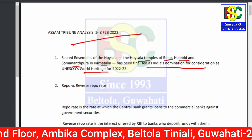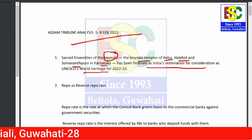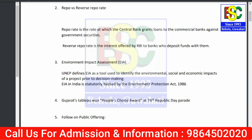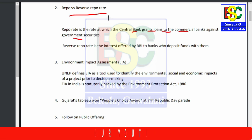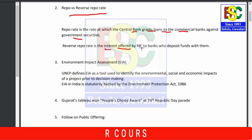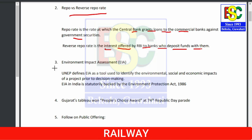Point number two: Repo rate versus Reverse Repo rate. Repo rate is the rate at which the central government grants loans to commercial banks against government securities. Reverse Repo rate is the reverse of it — the interest offered by RBI to banks to deposit funds with them. This can come as a direct question in PCS exams.